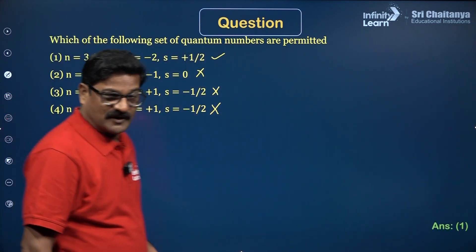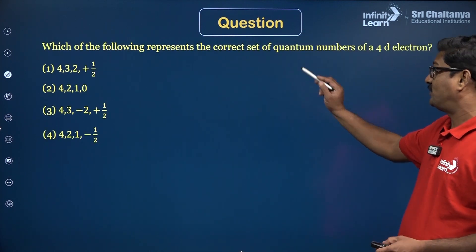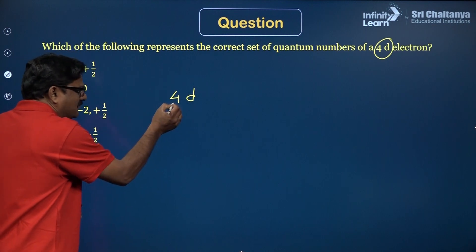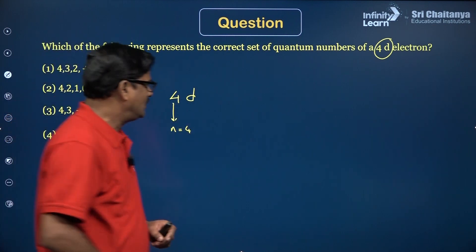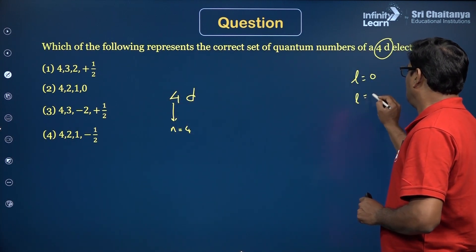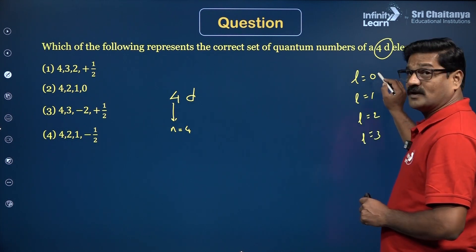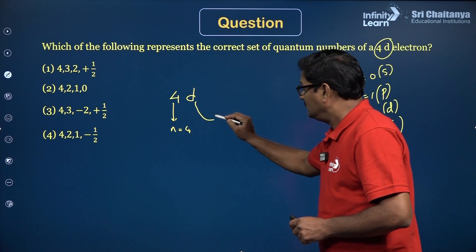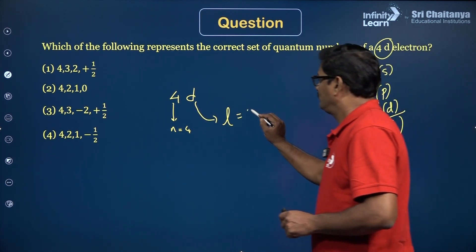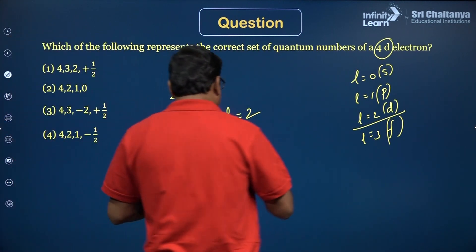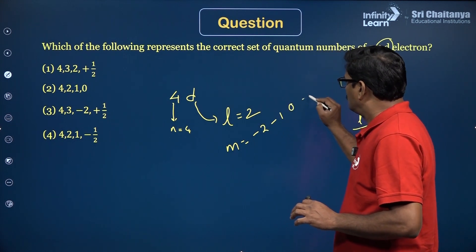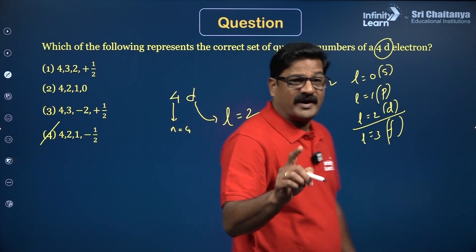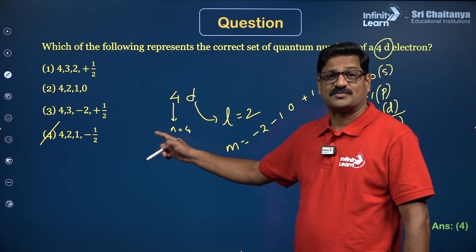Question 3: Which of the following represents the correct set of quantum numbers for the 4D orbital? The number 4 indicates N=4. For D orbital, L=2 (since S=0, P=1, D=2, F=3). M can be any value from −2 to +2. The valid combination is N=4, L=2, M=1, S=−1/2. The fourth option is the correct answer.